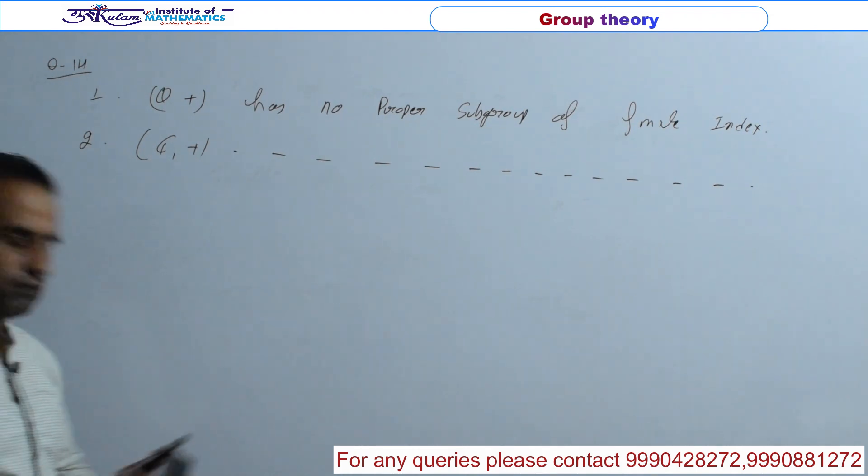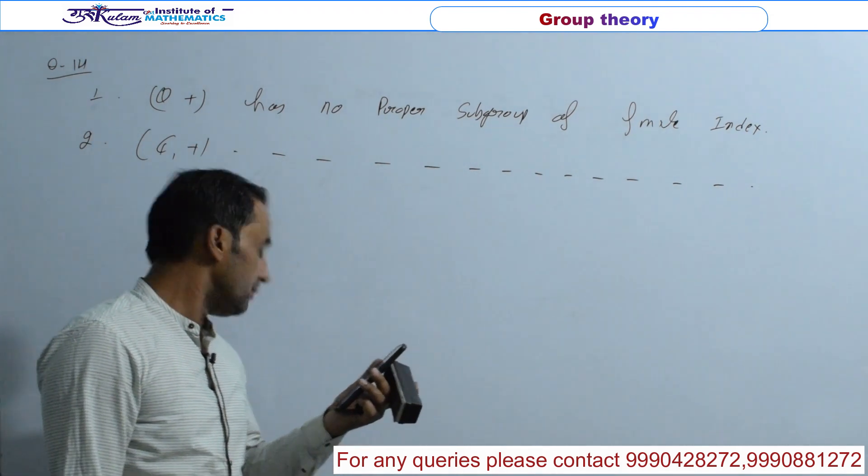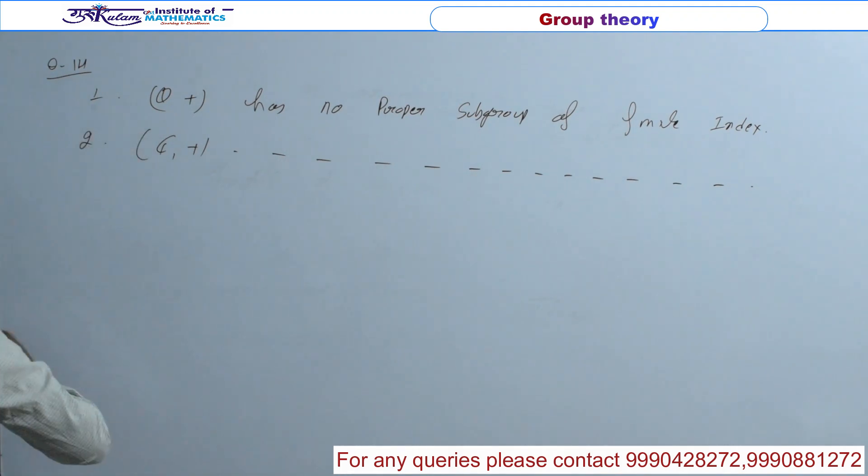First true, second false, second true, first false. इस type के आपके पास options हैं. चीक है? तो मैं यहां से start करता हूँ, Q plus से.